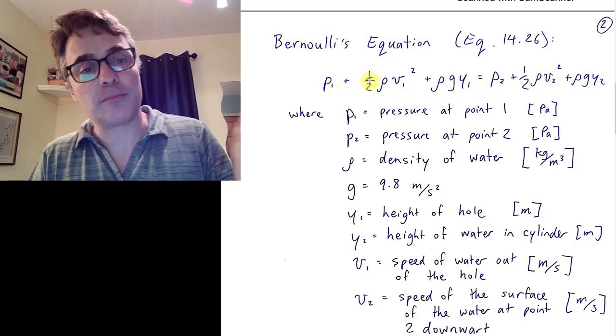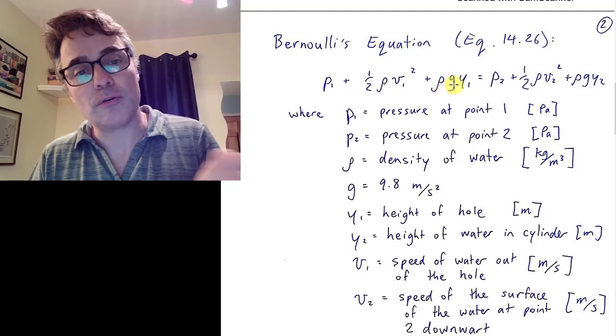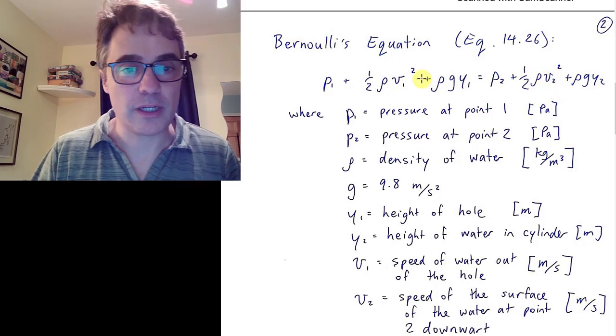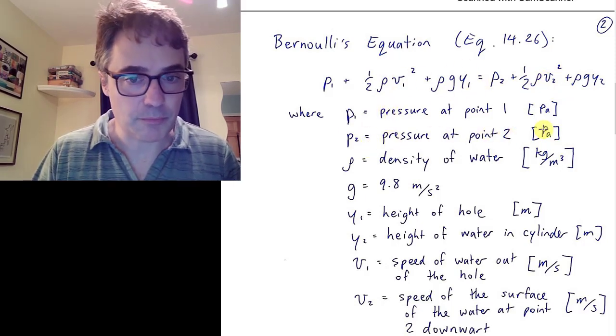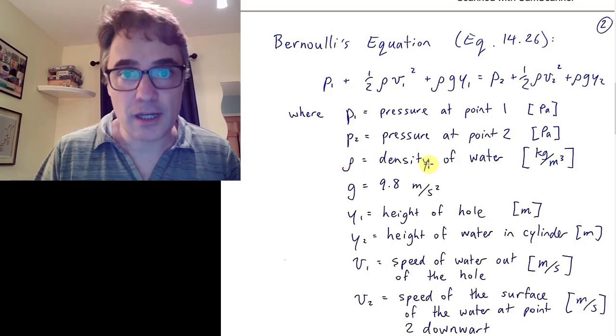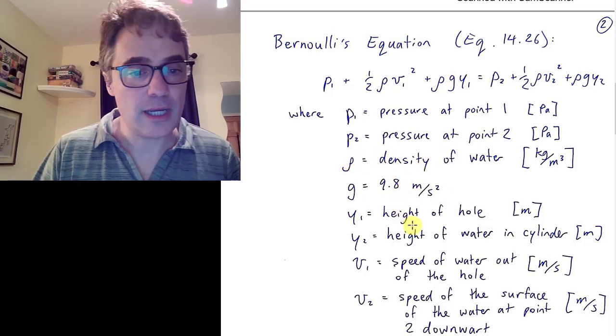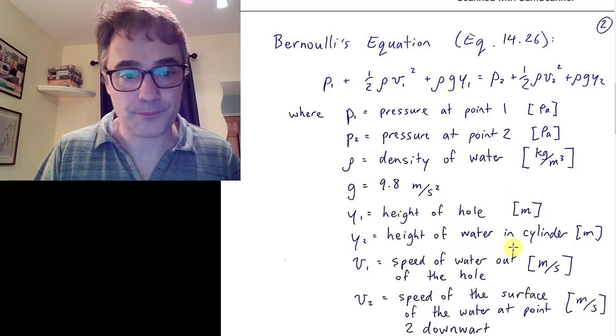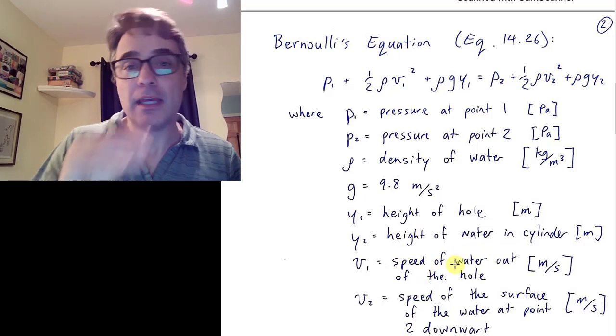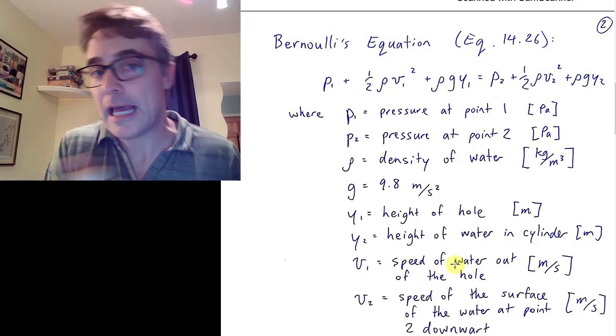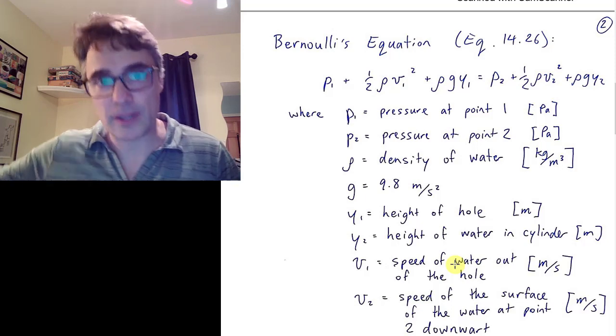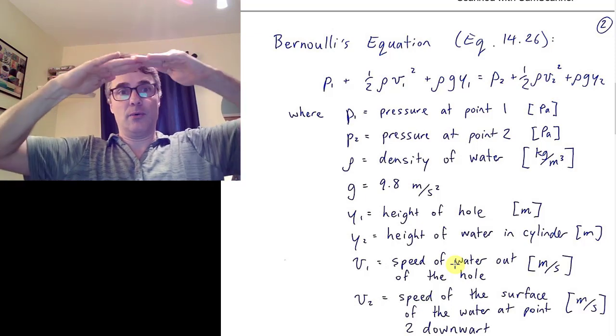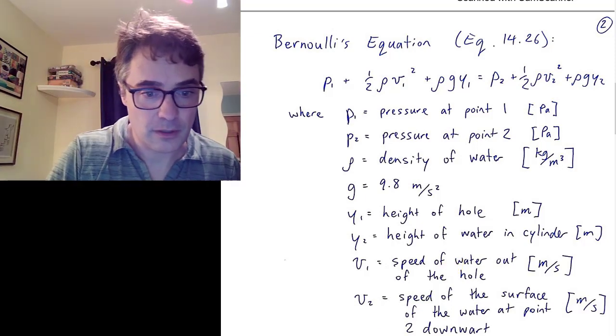The pressure plus 1 half rho V1 squared plus rho times G times Y1 is going to be the same at other points. We're just equating for two different points. Lowercase p is the pressure in pascals. Rho is the density of the fluid, water in this case. G is 9.8. Y1 is the height of the hole, and Y2 is the height of the water. V1 is the speed that the water shoots horizontally out of the hole, and V2 is how fast the surface of water is going down at the top of the cylinder.